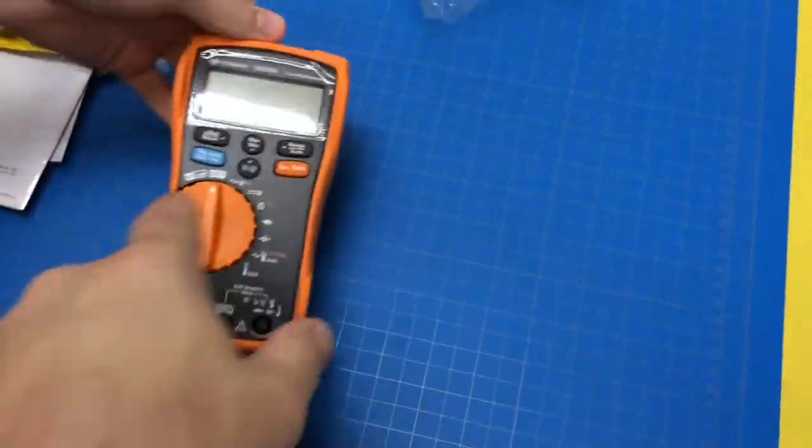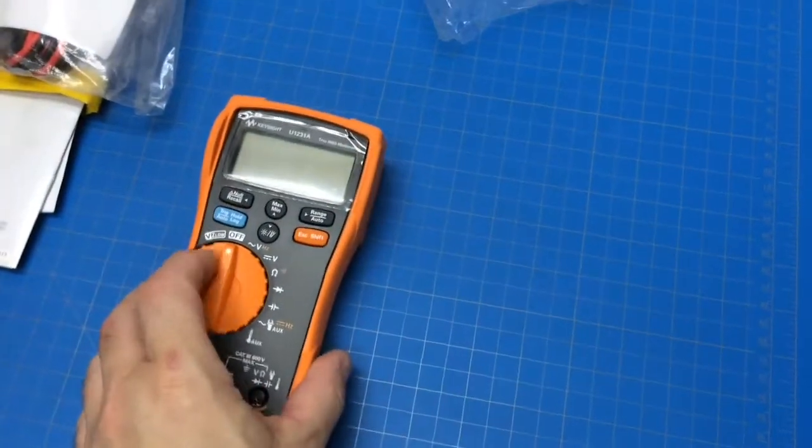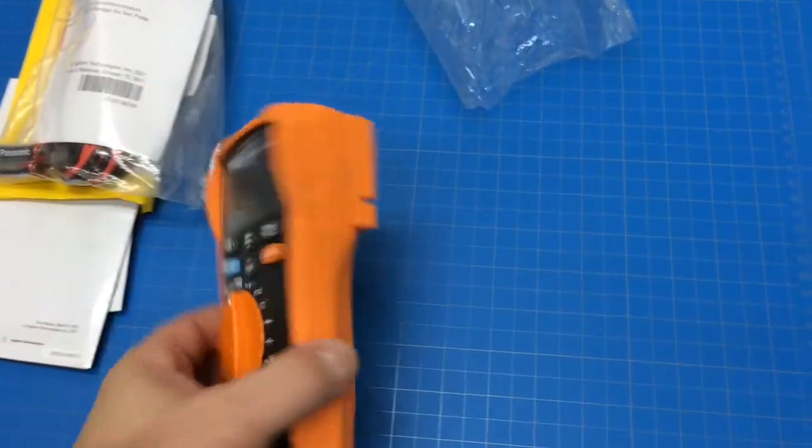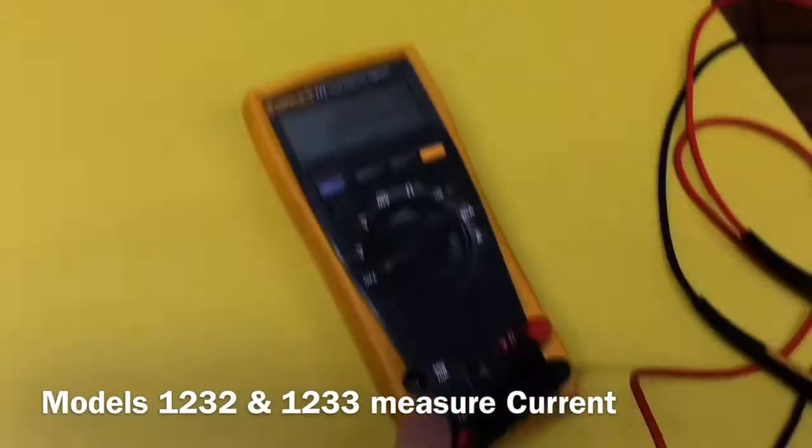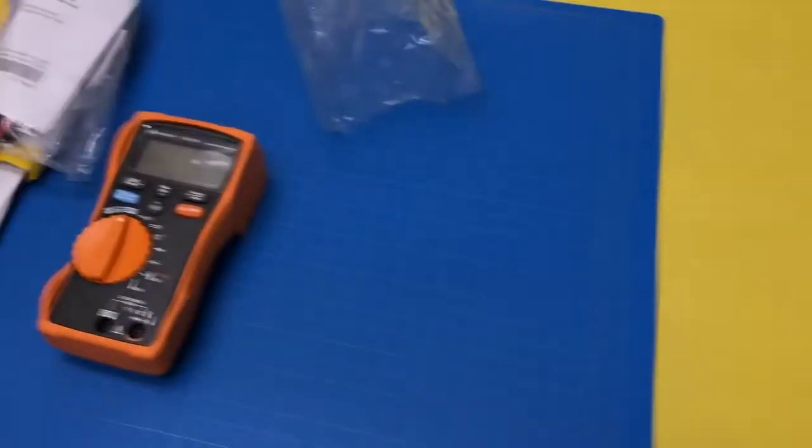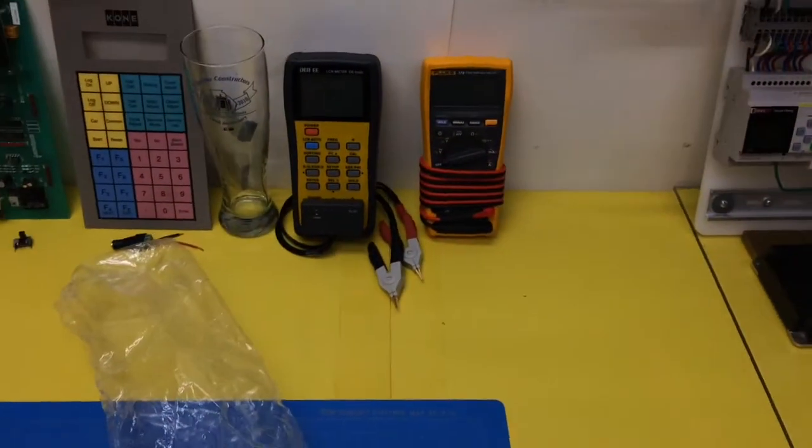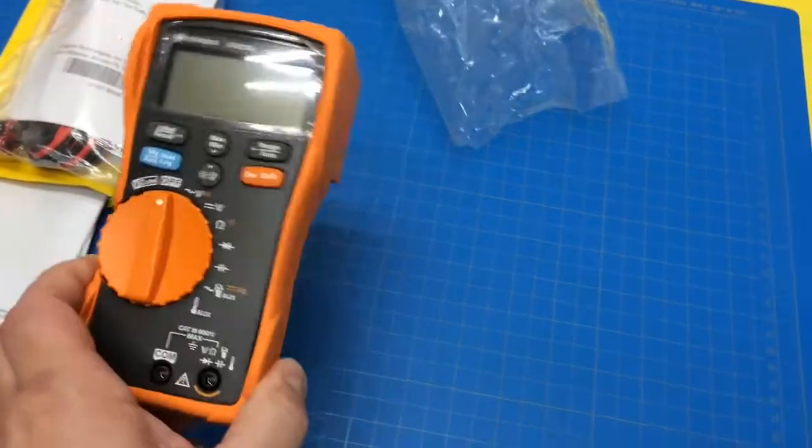It does have a low Z function, which is kind of handy. That's starting to become a little more common. This model doesn't have current, which it's not too often that I actually use current. And if I need to, I've got the Fluke meters for that. I've also got clamp-ons.